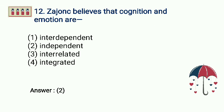Question 12: Zajonc believes that cognition and emotion are — Interdependent, Independent, Interrelated, or Integrated? Answer: Independent.